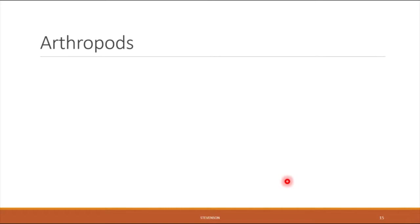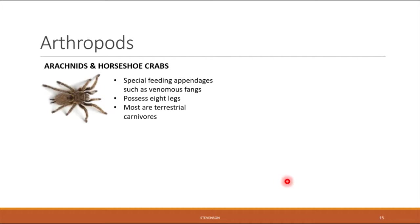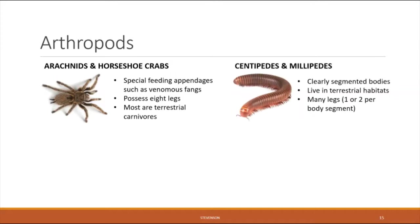Arthropods are divided into several subgroups. The first is the arachnids, which also includes horseshoe crabs — horseshoe crabs are more closely related to spiders than to other crabs. Arachnids have special feeding appendages such as venomous fangs, and most members are land-dwelling carnivores feeding on other arthropods. Arachnids also possess eight legs, which is an easy way to identify them.